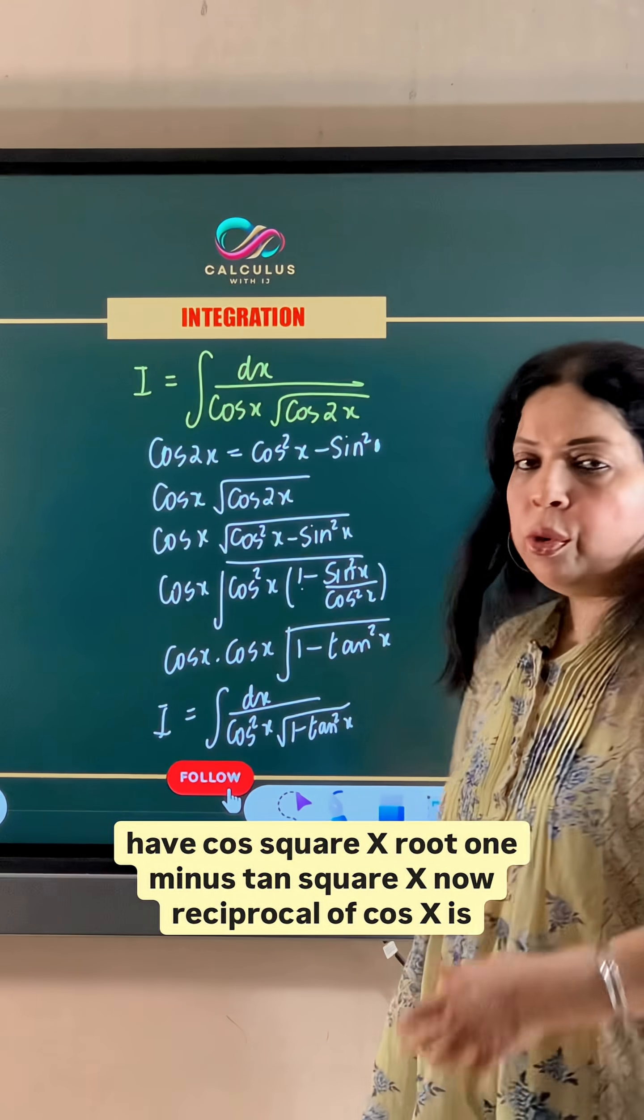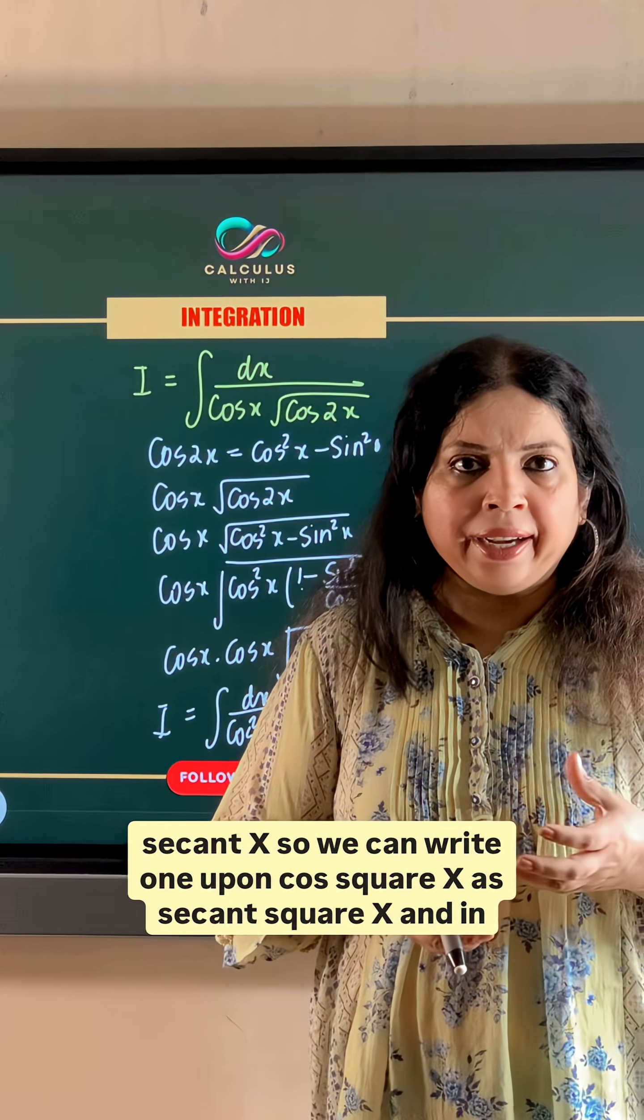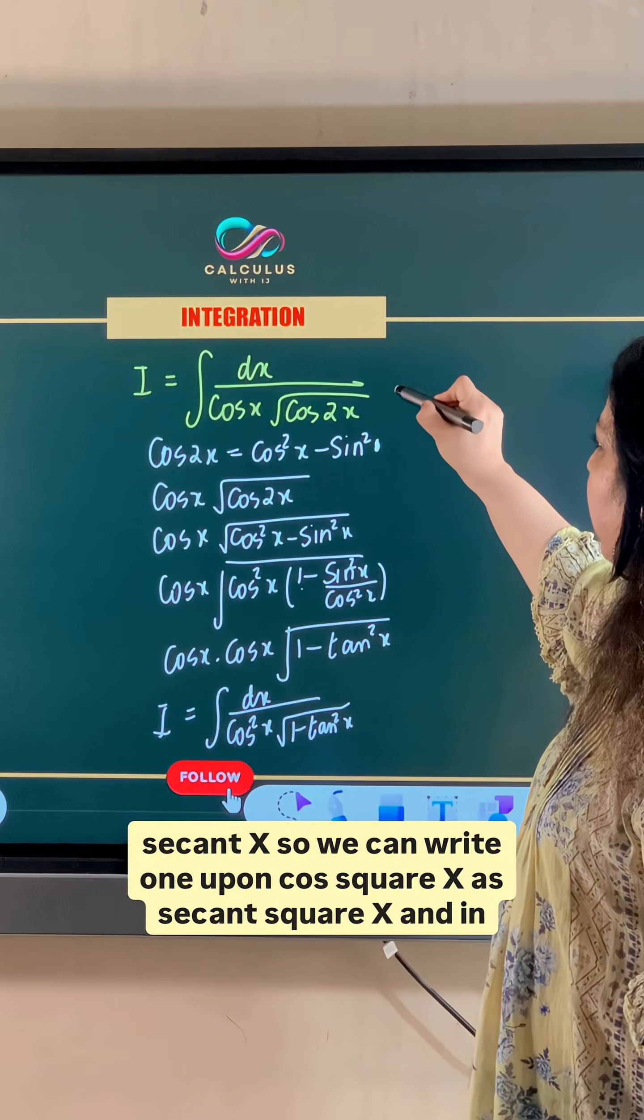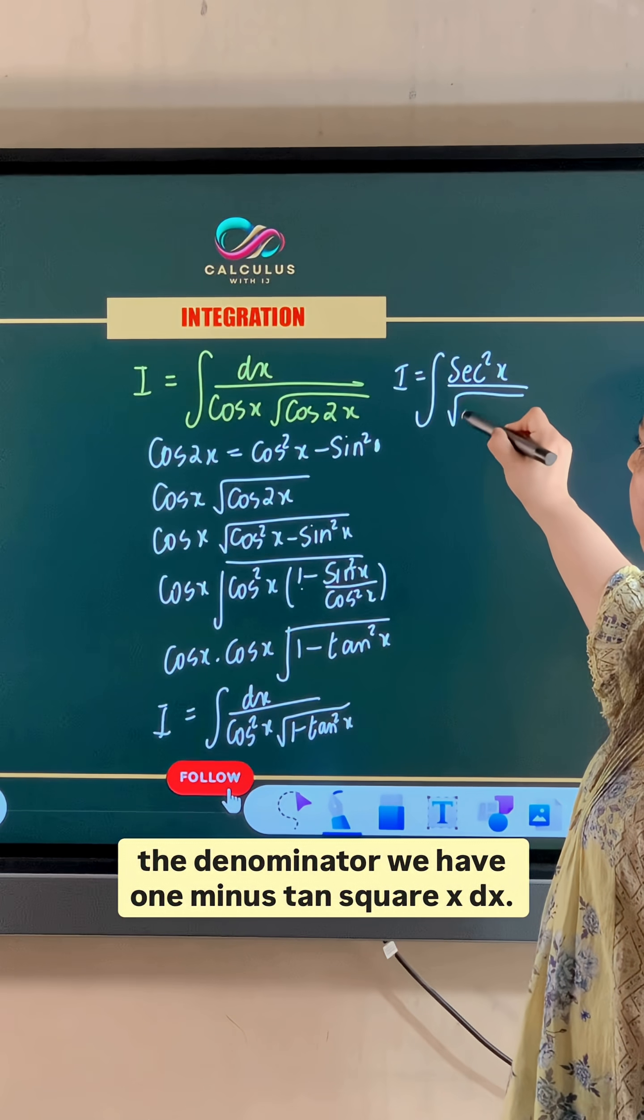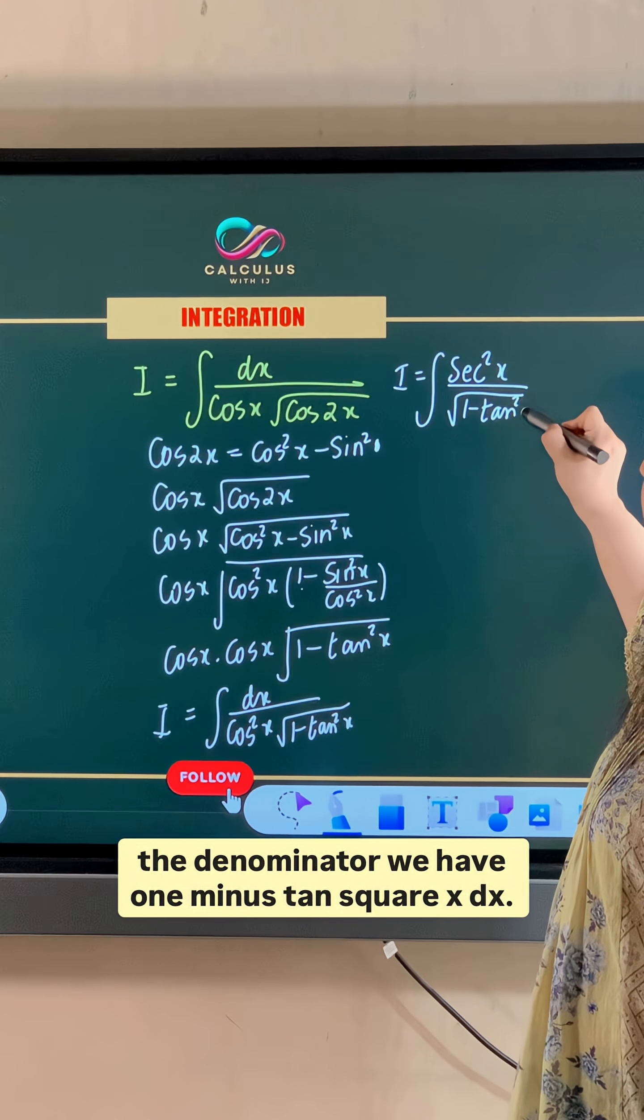Now reciprocal of cos x is secant x. So we can write 1 upon cos square x as secant square x and in the denominator we have 1 minus tan square x dx.